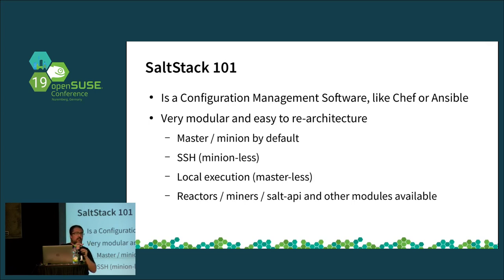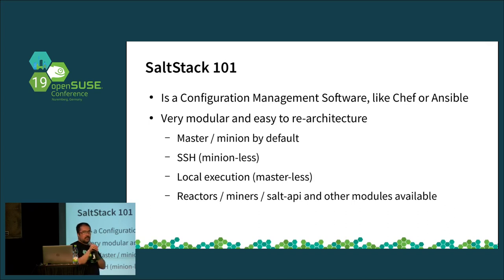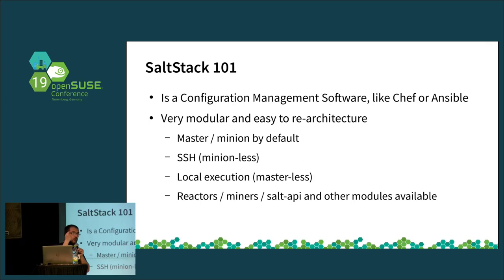Salt has different kinds of modules — reactors, miners, and Salt API — helping you provide a specific solution for your network. This is also critical for JOMI: you can use JOMI in a masterless configuration, use Salt API to monitor what is happening inside the installation process, and use Salt SSH to bootstrap an initial configuration. All these tools and configurations help resolve the problem of the installation process.